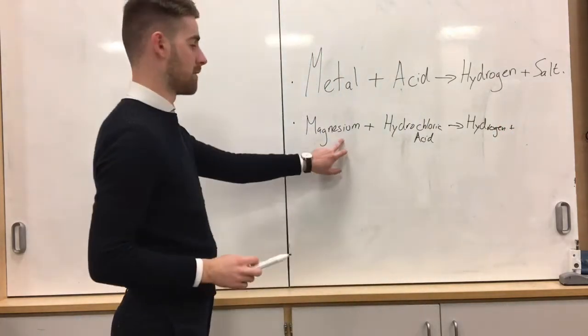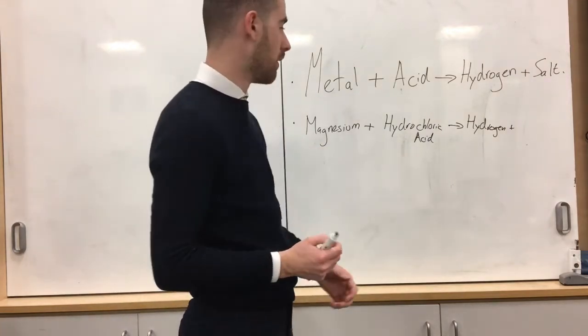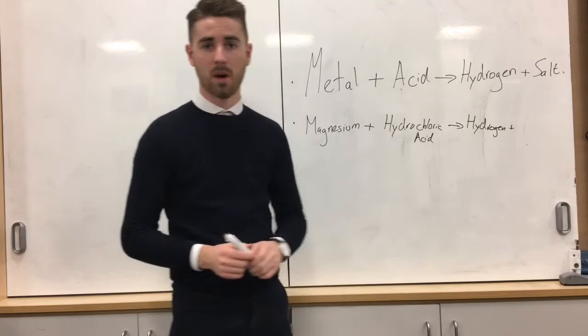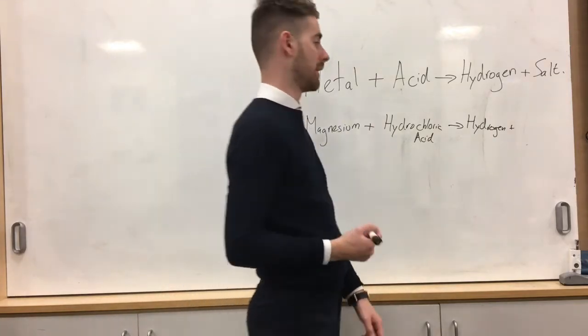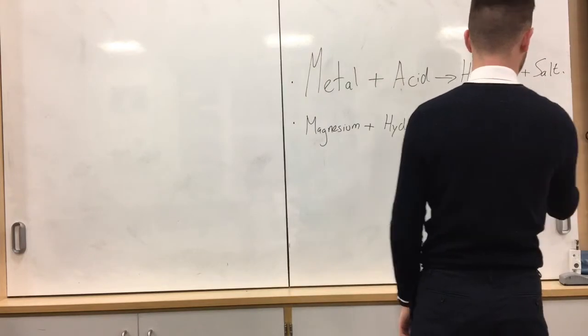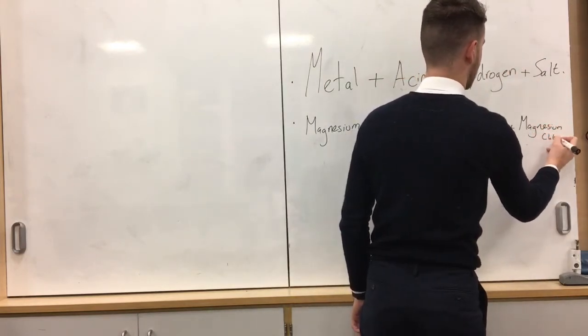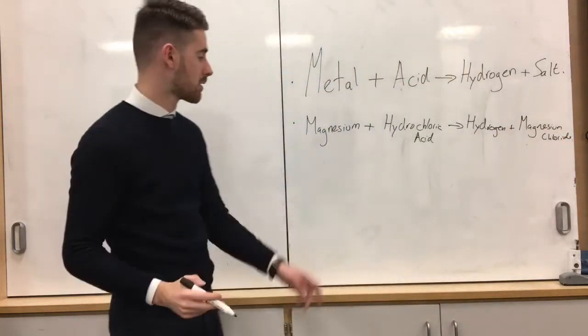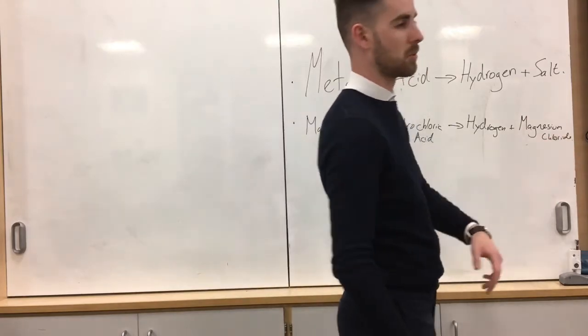So what's salt? Well we take the name of the metal for the first name of the salt. And then we take the surname of the salt from our acid. So what is the salt name that comes from hydrochloric acid? Well that's going to be chloride. So we get magnesium chloride. So the products of magnesium reacting with hydrochloric acid are hydrogen and magnesium chloride.